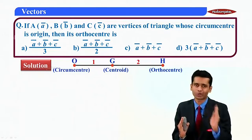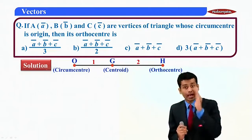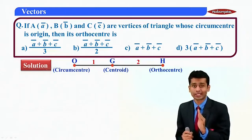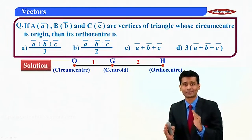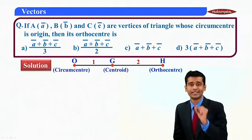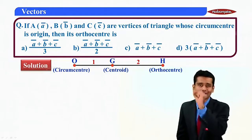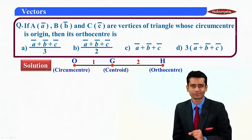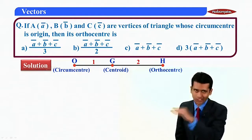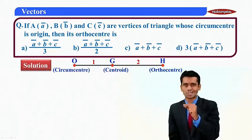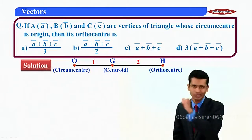You have studied in the earlier module that the circumcenter, centroid, and orthocenter are collinear, and the orthocenter divides the circumcenter and centroid internally in the ratio 2:1 — from the orthocenter to circumcenter 2:1, and from circumcenter to orthocenter 1:2.